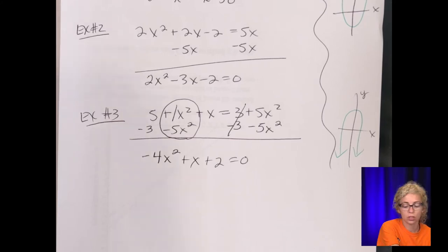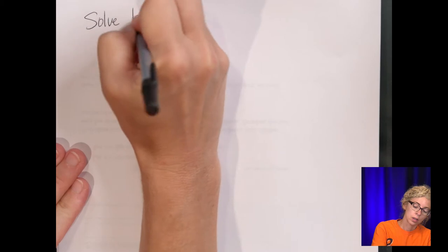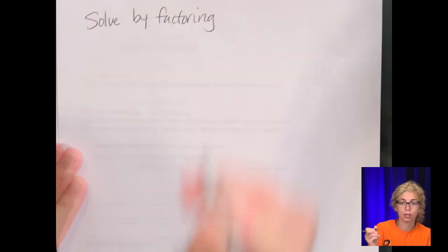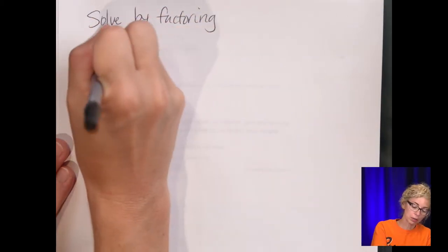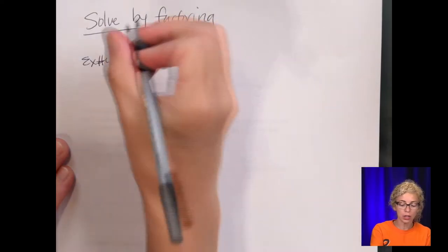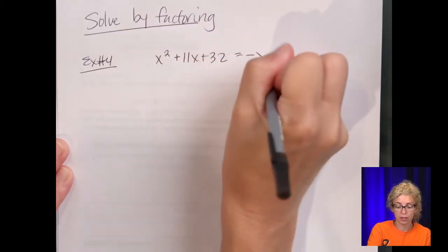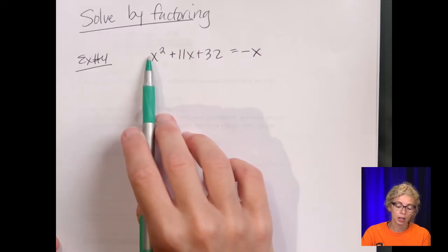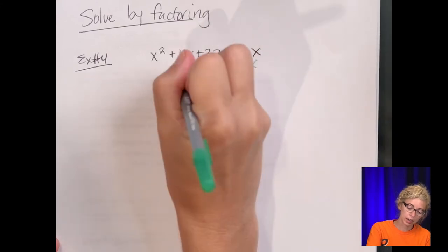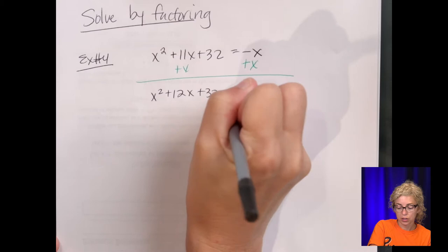The last two sections are solving by factoring, so we'll do a few of those because I know factoring can be a challenge. Solve by factoring is just one method to solving a quadratic equation. Example number four: the equation is x squared plus 11x plus 32 equals negative x. When solving, you do want the x squared term to be positive. So I'm going to add x to both sides, and now we get x squared plus 12x plus 32 equals zero.